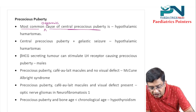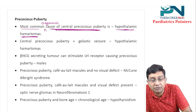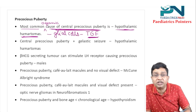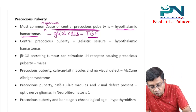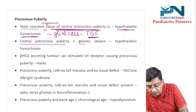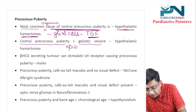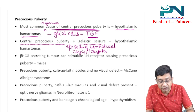The most common organic cause of central precocious puberty is hypothalamic hamartomas. In hypothalamic hamartomas, glial cells produce transforming growth factor, which stimulates the GnRH pulse generator, causing precocious puberty. If the question gives central precocious puberty plus gelastic seizures — episodes of unnatural crying or laughter — your answer should be hypothalamic hamartomas.